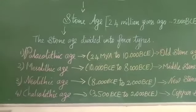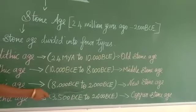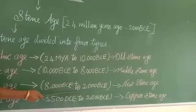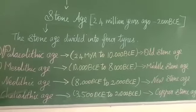The third one is Neolithic Age, from 8,000 BCE to 2,000 BCE, also known as New Stone Age.